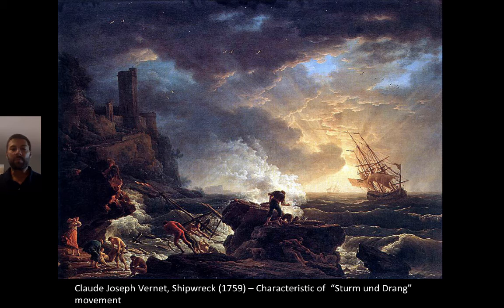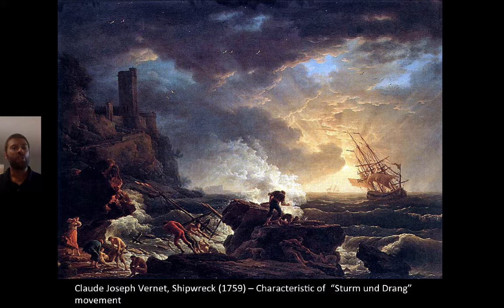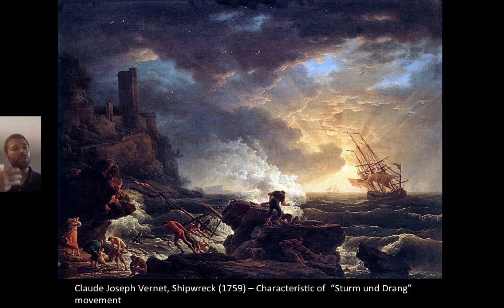Here we have another natural scene: Claude Joseph Vernet's The Shipwreck. This is characteristic of the Sturm und Drang movement — basically Romanticism in Germany. Sturm und Drang refers to storm and stress, and is Romanticism among the Germanic-speaking people such as the Dutch and the Germans. Of course, Goethe will be representative of that literature. You see again that emphasis upon drama and the passions, trying to appeal to the emotions as you view this work of art.